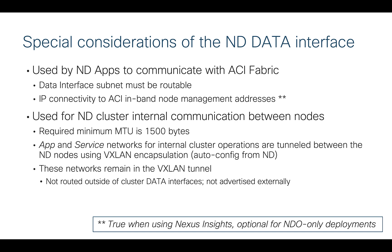The second job of the data interface is that the Nexus Dashboard cluster uses it to form the cluster itself. The cluster nodes will build VXLAN tunnels between the three of them, and inside that VXLAN tunnel the cluster forms. The key thing to care about is the minimum MTU is 1500 bytes — standard, no jumbo frames needed, but don't go lower than 1500 bytes. You'll also notice during setup we specify app and service networks — don't worry about those, they stay inside the inter-cluster tunnels and are not routed outside.